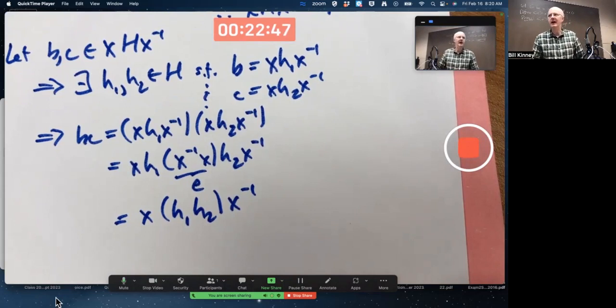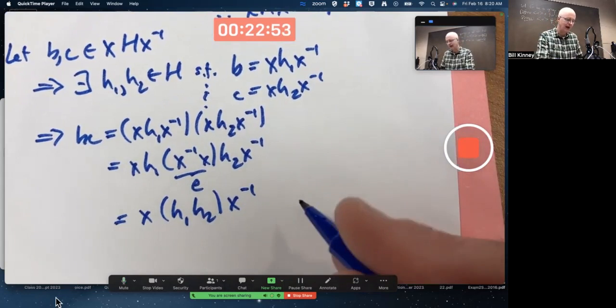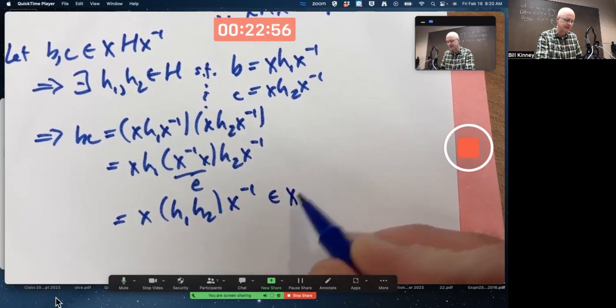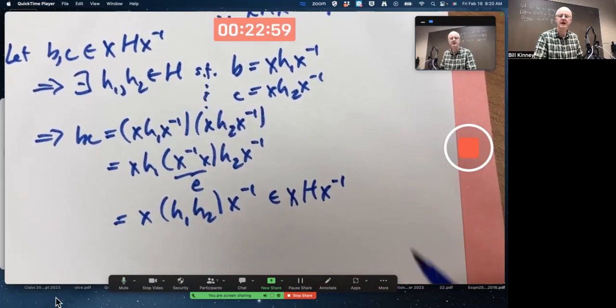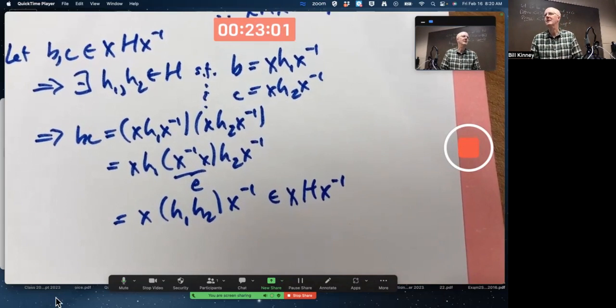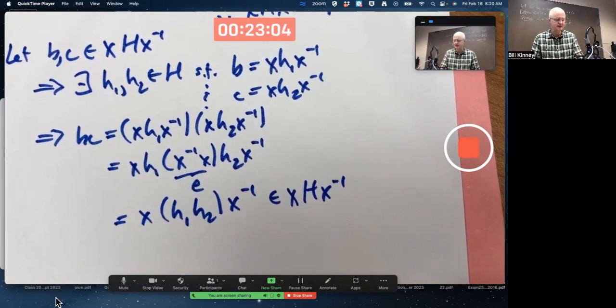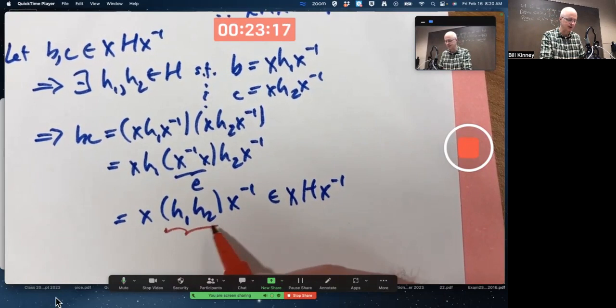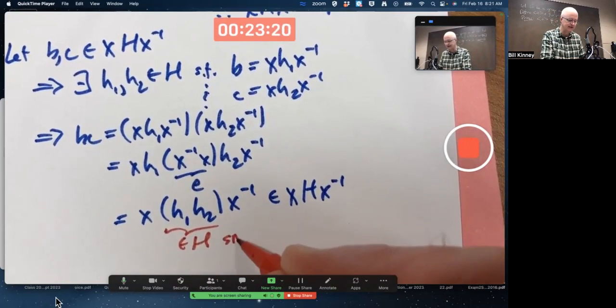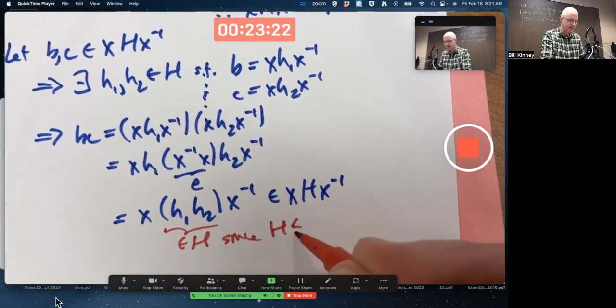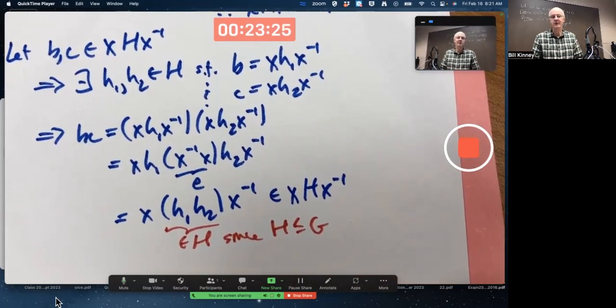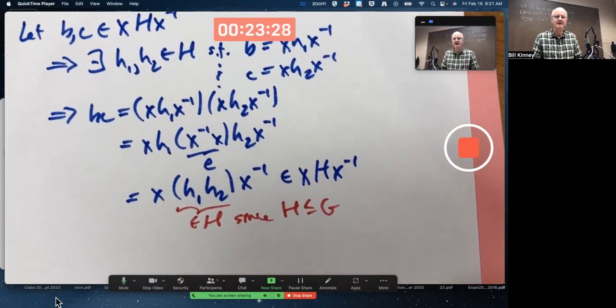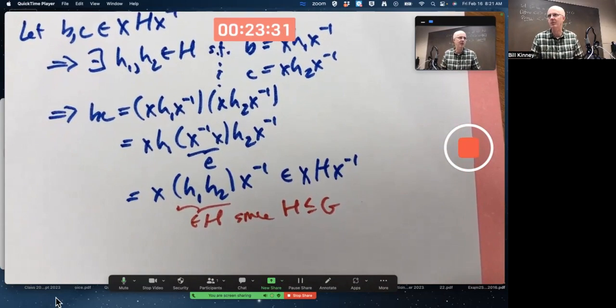X inverse times x is e. I get x times, I'll put parentheses like this for emphasis, h1 times h2 times x inverse. To finish verifying closure under multiplication I do need to note something here. What allows me to finish this verification to say this is an element of xHx^(-1)? What's the key fact that I need to get to that final conclusion based on the form of this? Yeah, H is a subgroup so it's closed under multiplication. This is an element of capital H since H is a subgroup of G. That would be really important to remark. That's essential, in fact. What we're proving here is not true if H is not a subgroup.